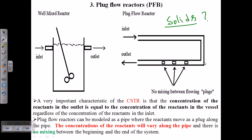In the plug flow reactor, we have a pipe-like structure. It may look like a simple small U-shaped structure, but it is actually very long — sometimes one or two miles. This pipe-like structure is placed underground.